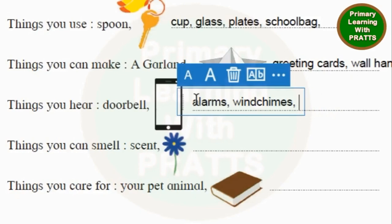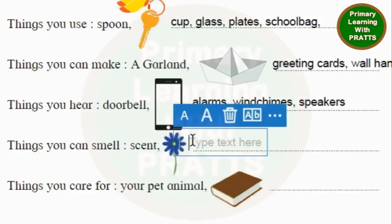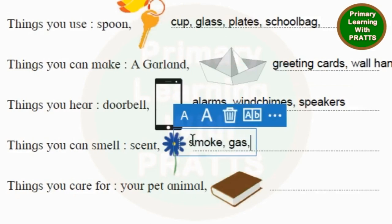If your teacher says Music is wrong, you can write Speakers. Things you can smell: Scent, Flower. We will add Smoke — you can smell smoke. You can smell Gas. You can also smell Food and Fruit. We are writing Food, as that is inclusive of everything.